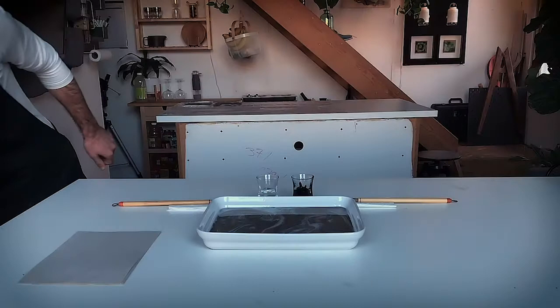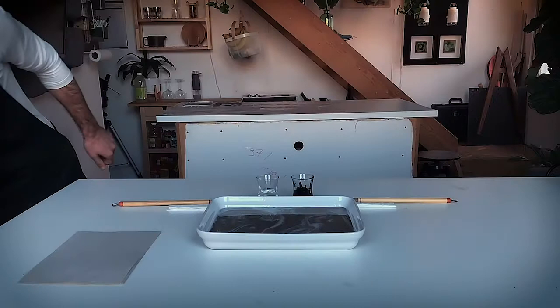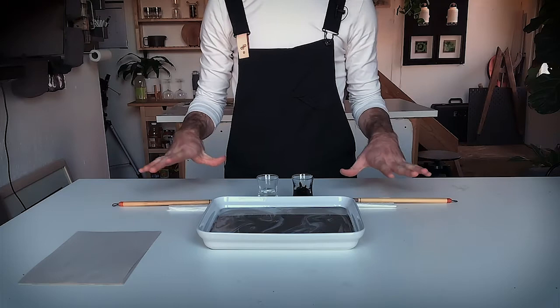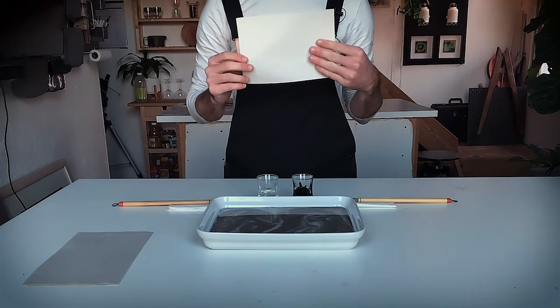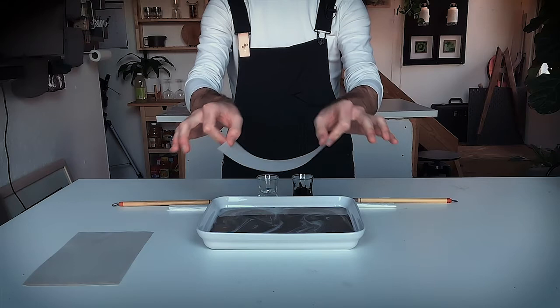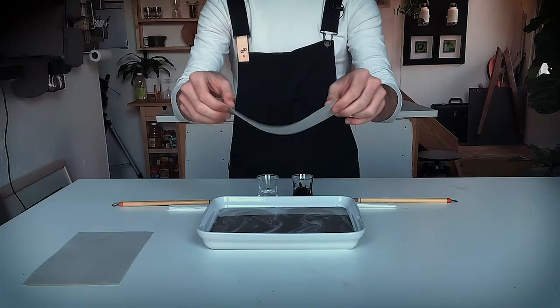All right. Once you're pleased with the swirls that you've found in your dish, you are ready to take a print. Now taking a print is just an instant transfer of ink to paper. So it will essentially be what you see in the dish is what you get on the paper. So as soon as you like what you're seeing, hold your paper above the dish. What helps, I find, is to bow the paper in the middle and then lay the two edges down. This helps avoid any bubbles. So here we go.